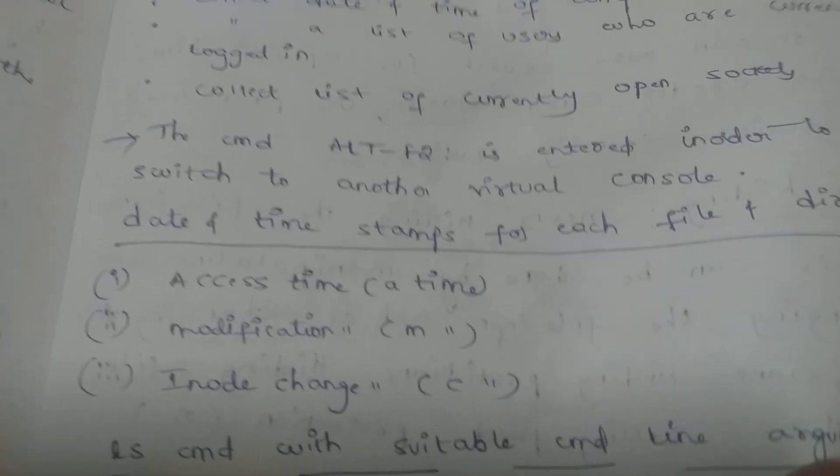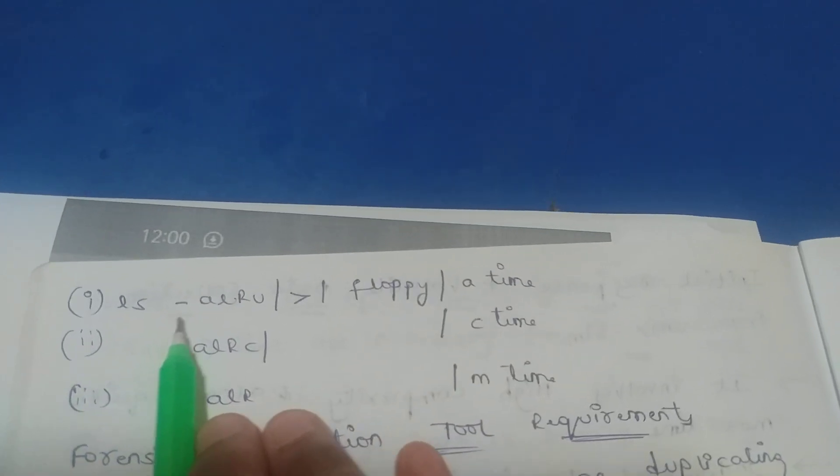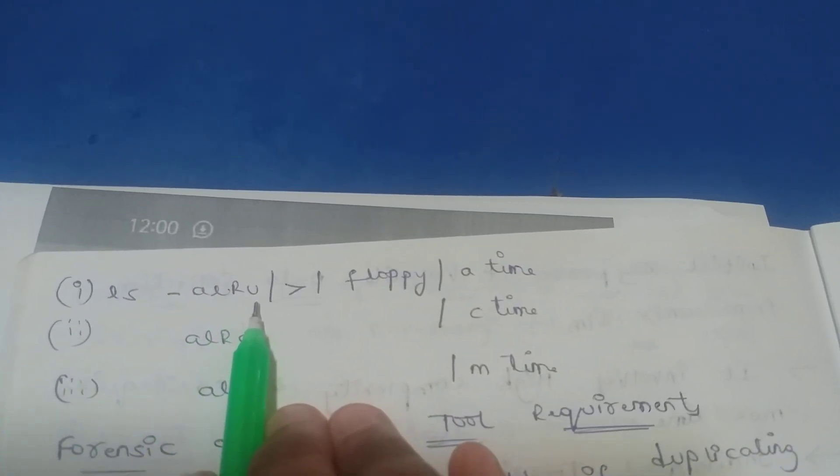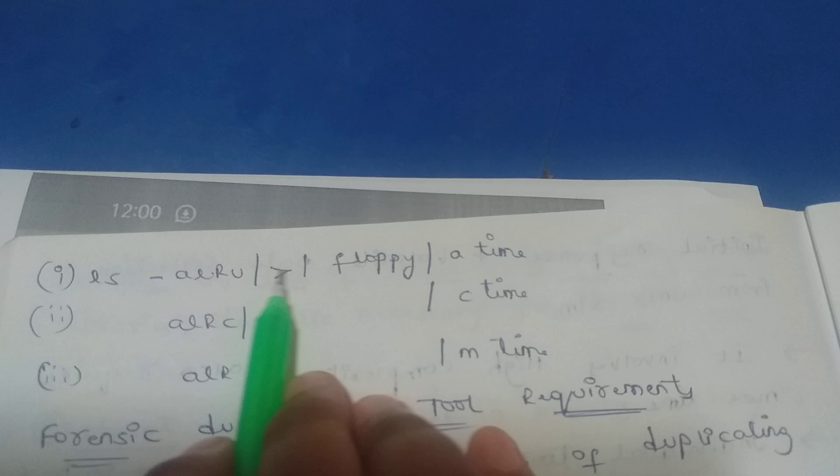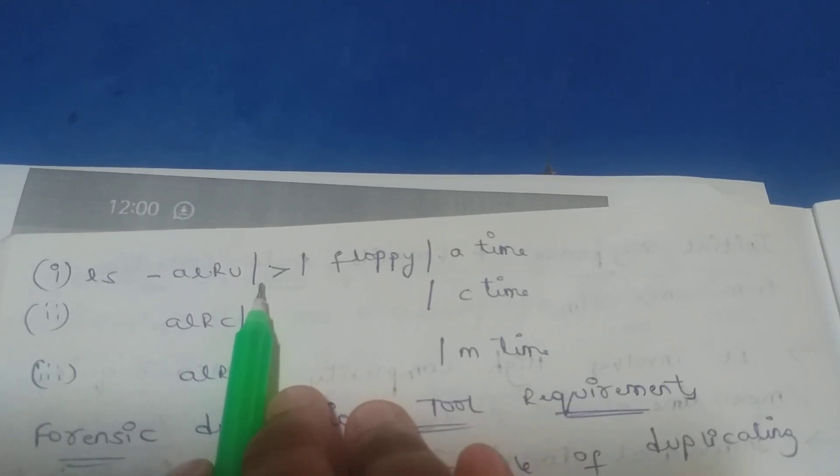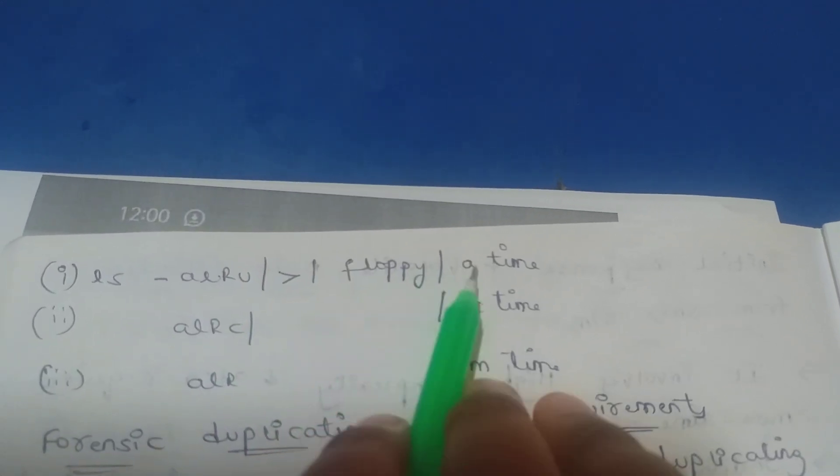We are using Linux ls -a -l -r -u slash angular bracket closed slash floppy A time. Access time, change time, modification time, three different command line arguments.